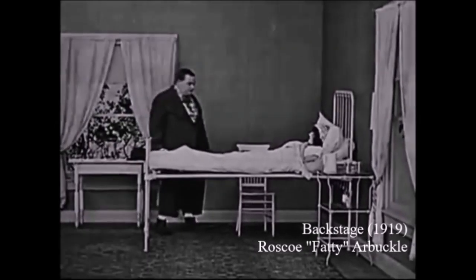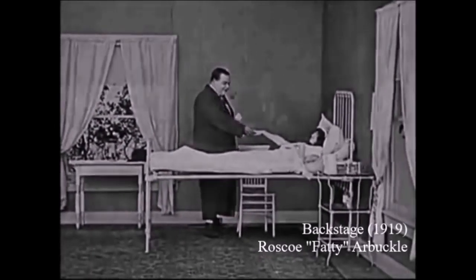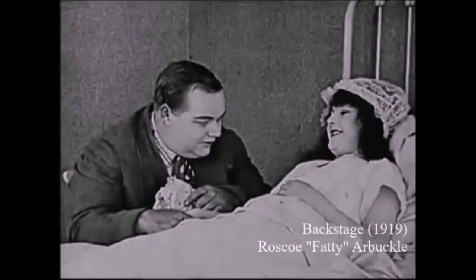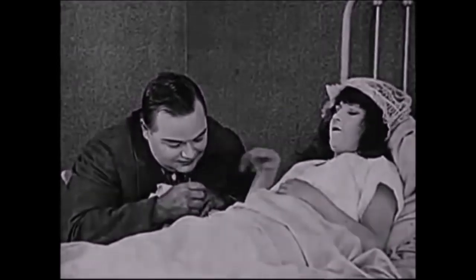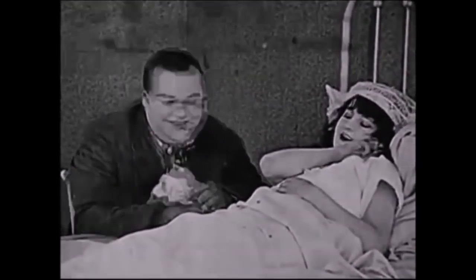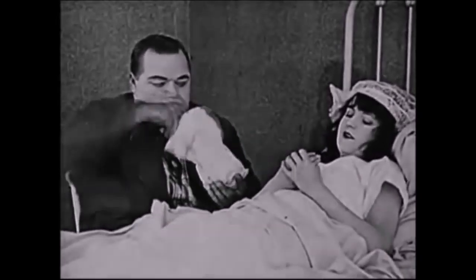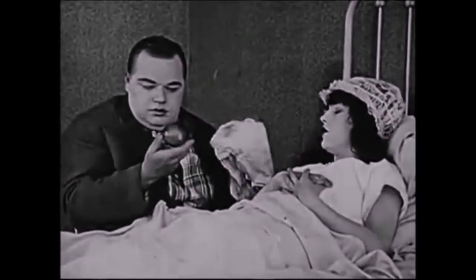Backstage from 1919, starring and directed by Roscoe Fatty Arbuckle, he paid a visit to the bedridden girl at the end of the film. He approaches the bed with a package, from which he takes an apple.